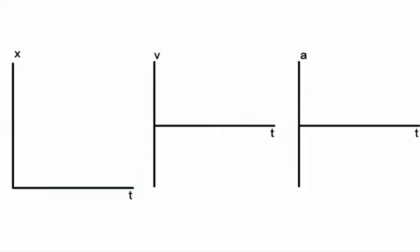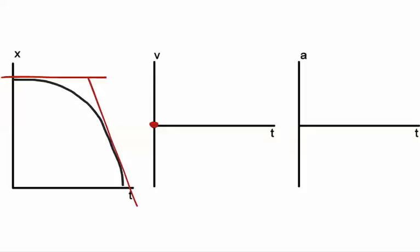We'll look at one more example. Suppose the position versus time graph shows a tangent line with a slope close to zero at the beginning, and then a negative slope at the end. The velocity-time graph would start at zero and end negative — a linear graph with a negative slope. Therefore, the acceleration versus time graph shows a constant negative acceleration.